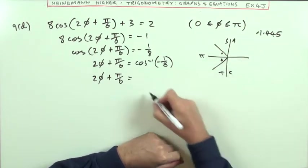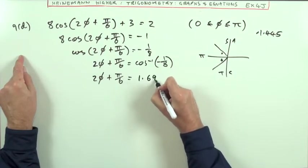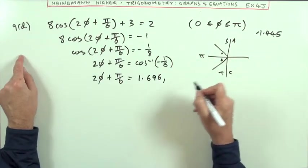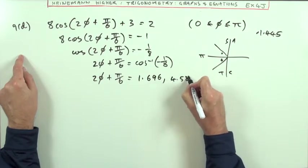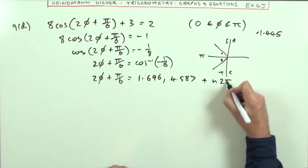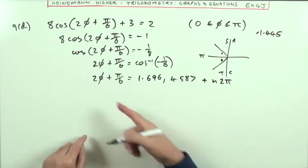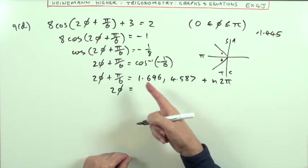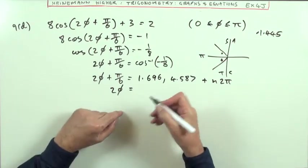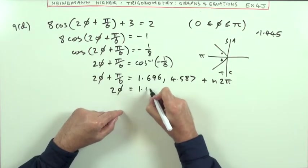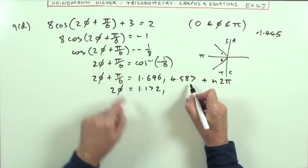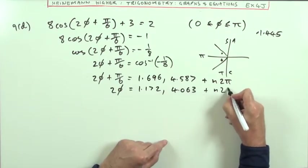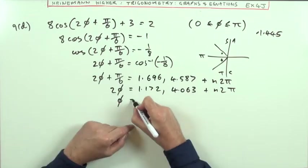I'm in radians, so halfway around is π radians, which is 3.14. So 2φ + π/6 will be 3.14 minus 1.445, which equals 1.696, or 3.14 plus 1.445, which equals 4.587, plus n lots of 2π. That π/6 is a pest, so I'll do the calculation in decimals: 1.696 minus π/6 equals 1.172, and 4.587 minus π/6 equals 4.063.